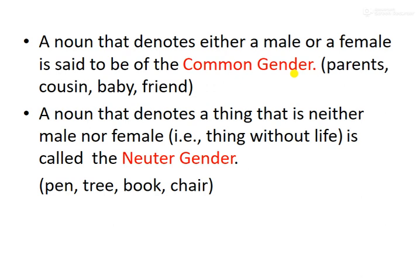We use common gender for words like friend, which can refer to both male and female. Common gender denotes something that is neither exclusively male nor female. That also includes things without life — non-living things.